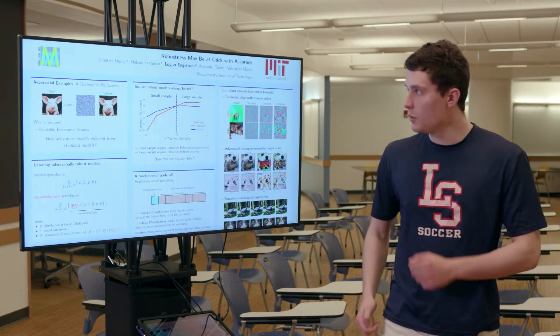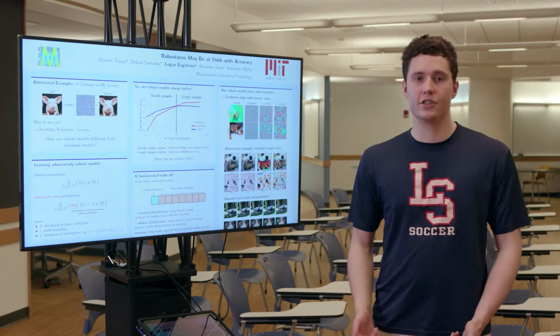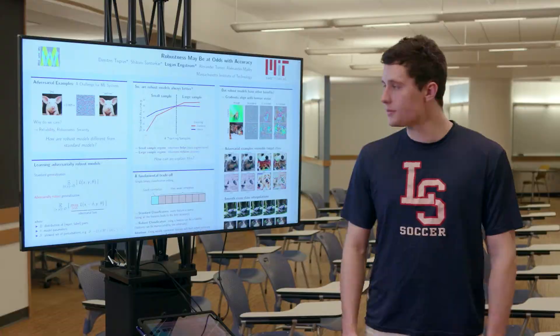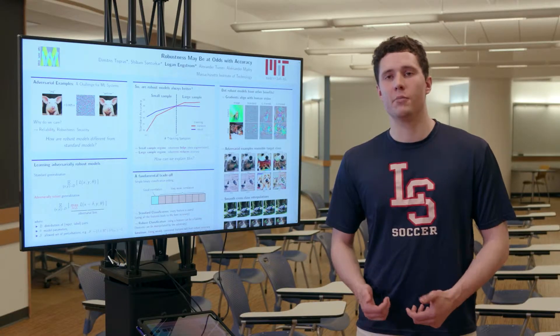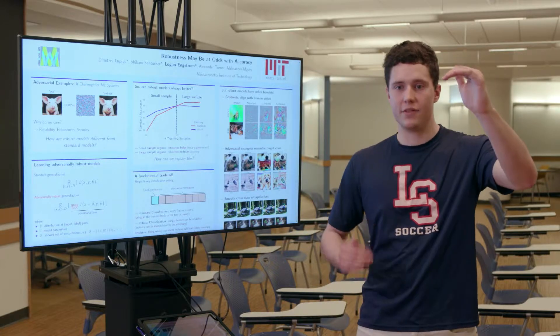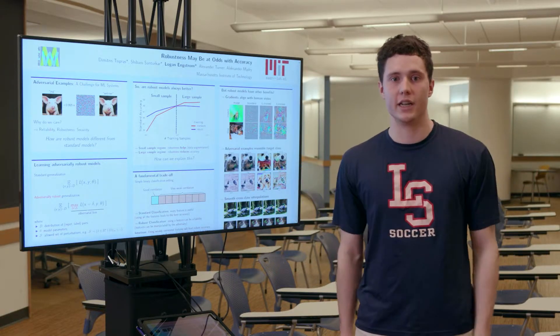What we set out to do is figure out if there's really a fundamental trade-off here or if we're just not doing things correctly. We start out with a theoretical model where we essentially show that there does exist a setting with a fundamental trade-off between accuracy and robustness. This statement is essentially of the form that if you reach a certain amount of accuracy, you have to have at most a certain amount of robust accuracy, and vice versa.